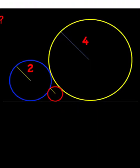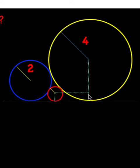Let's begin by constructing a radius from the center of this yellow circle perpendicular to the white line. And let's also drop the radius of this red circle. Then from the center of the red circle, let's construct a line perpendicular to the radius of the yellow circle that we just constructed. And from the center of this red circle, let's connect this to the center of this yellow circle. The angle here is 90 degrees, and the angle here is also 90 degrees, and let's label the parts.